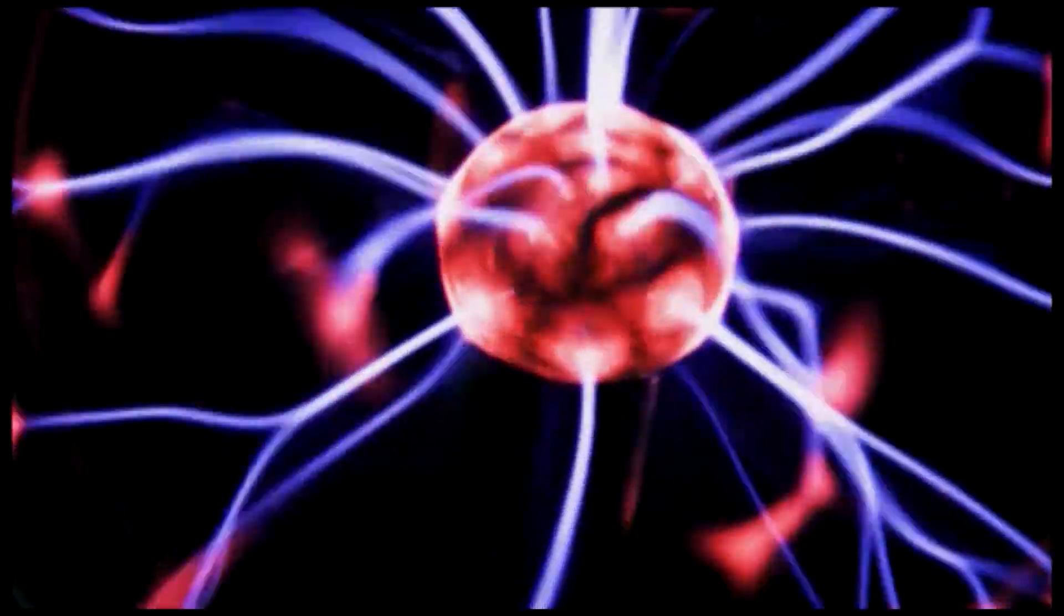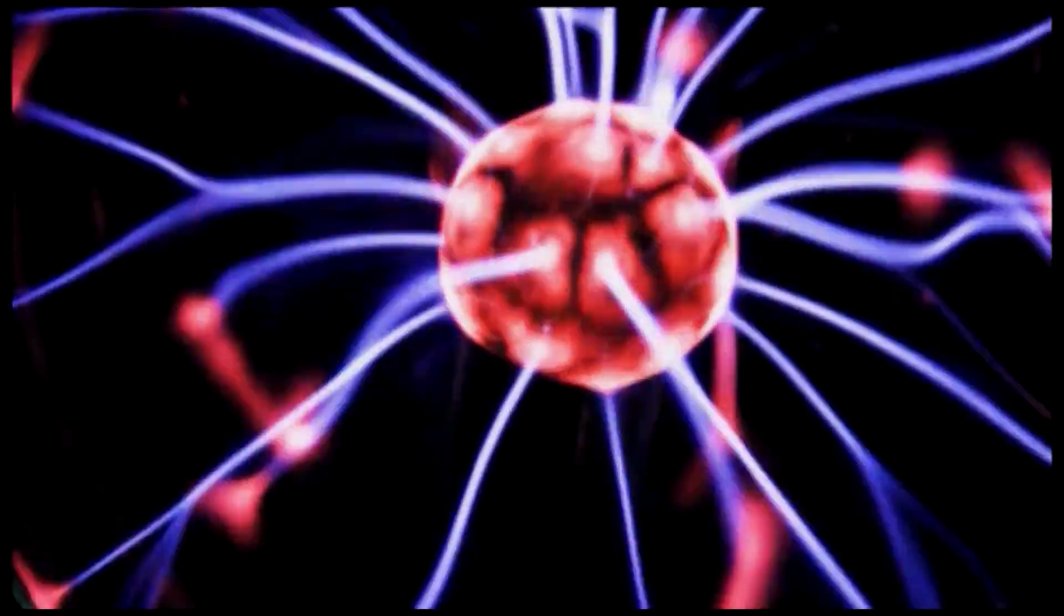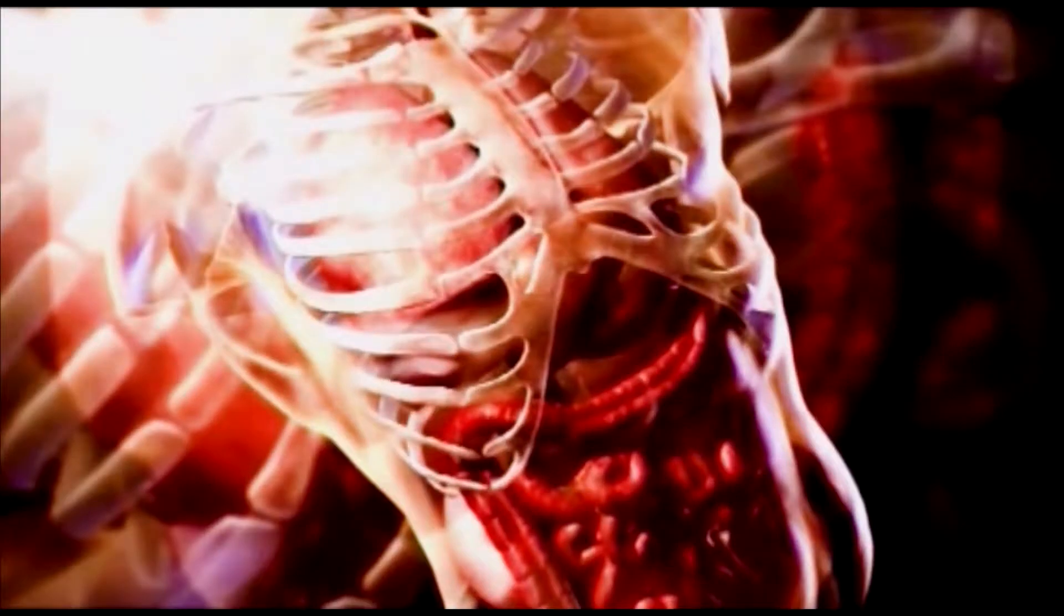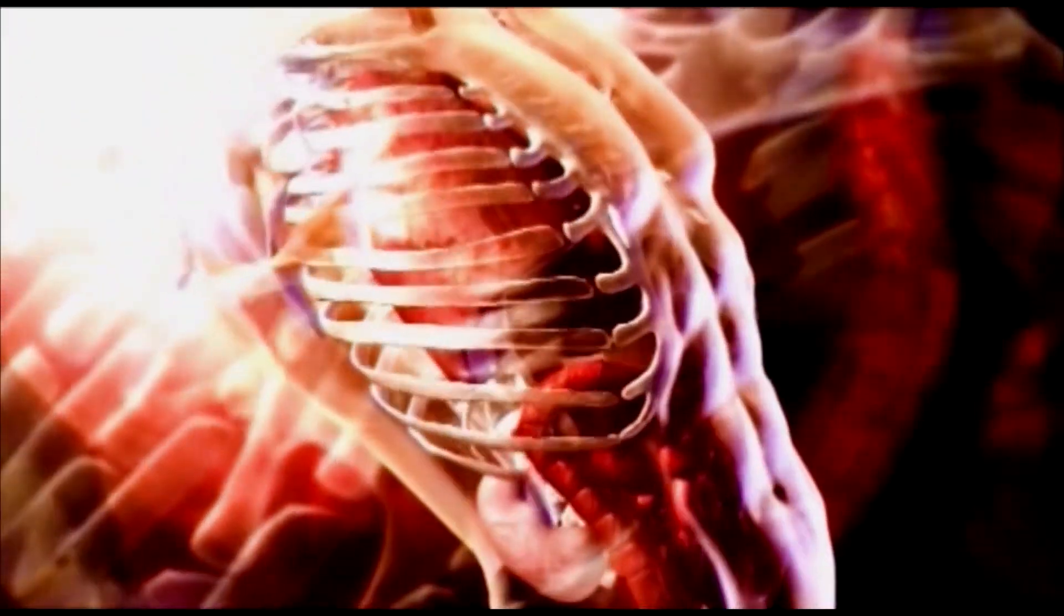Egg and sperm unite and a single powerful stem cell is created. From that single stem cell dividing billions of times, a baby is born. Replicating stem cells create your heart, your organs, your entire body—stem cells, the basis of human life.